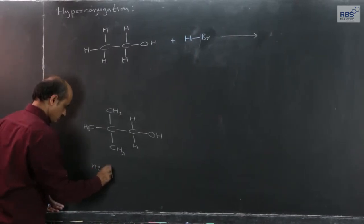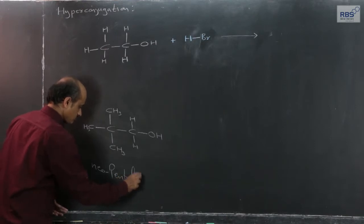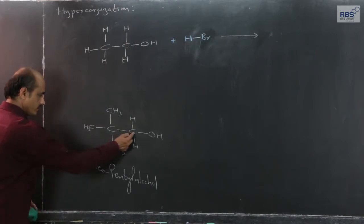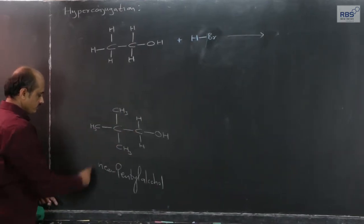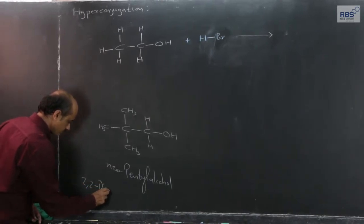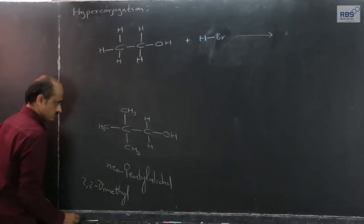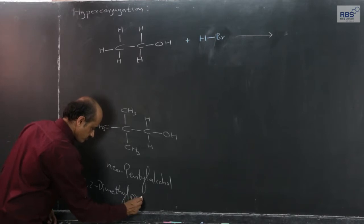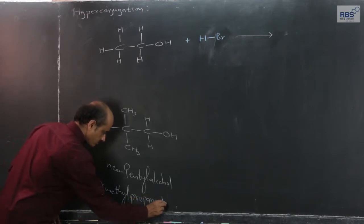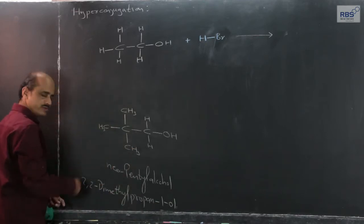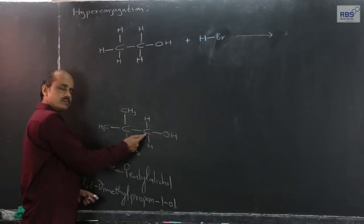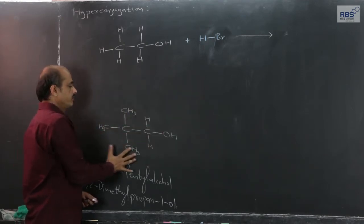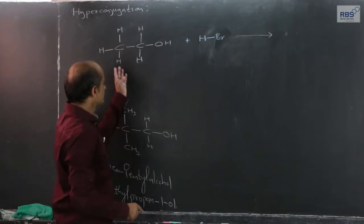As per IUPAC nomenclature, this is 2,2-dimethylpropan-1-ol. The OH group is attached to a primary carbon atom, but one quaternary carbon atom is present. Before considering this example, let us start with the simplest example.